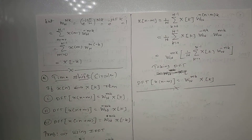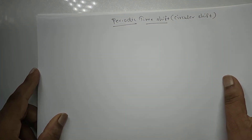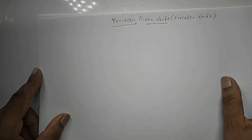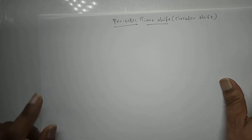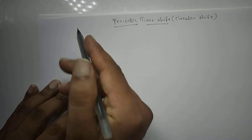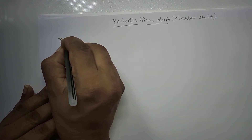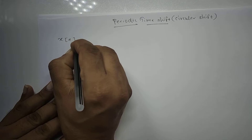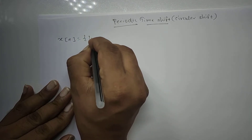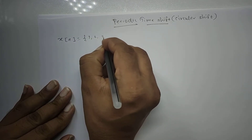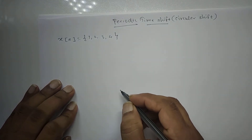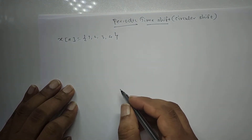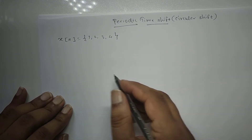Now we will see the periodic circular time shift with an example. Suppose x[n] = {1, 2, 3, 4}. We need to find x[n-1] - the circular time shift by one sample.